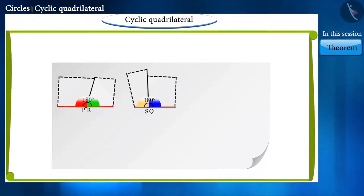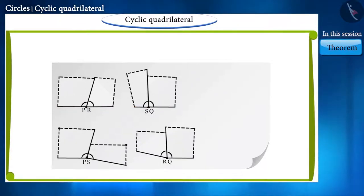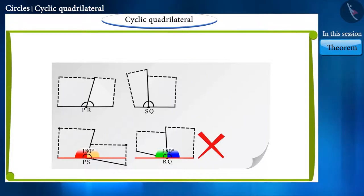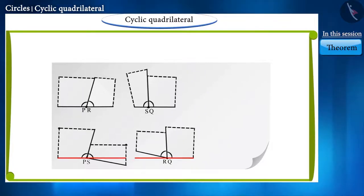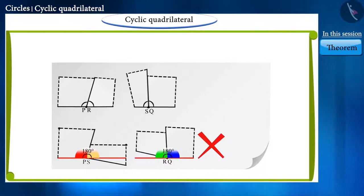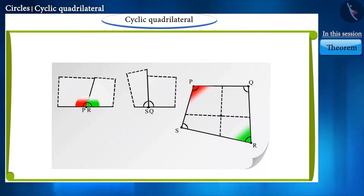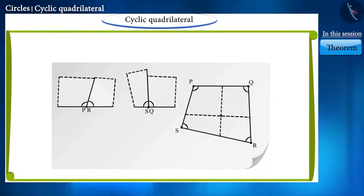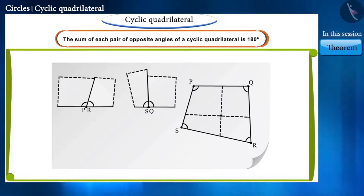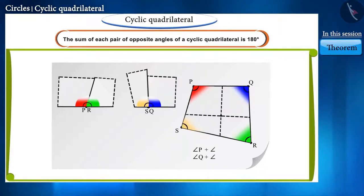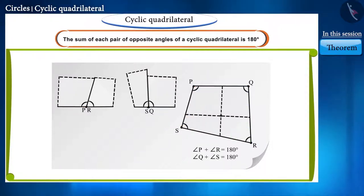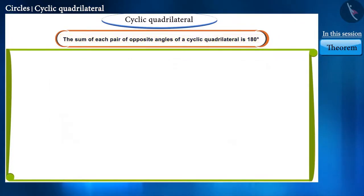Now we arrange these pieces together. You can see that in both these cases we are getting a straight line — that is, the sum of these angles will be 180 degrees. But we do not get a straight line in the other cases, so those sums will not be 180 degrees. In quadrilateral PQRS, angle P and angle R are opposite angles, and so are angles Q and S. So the sum of each pair of opposite angles of a cyclic quadrilateral is 180 degrees.